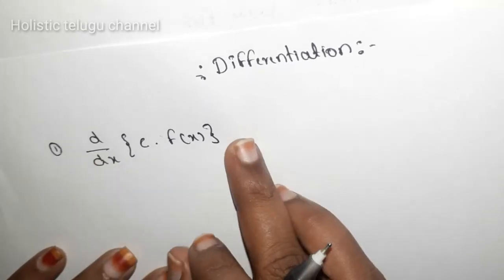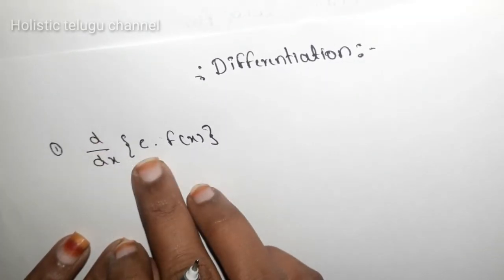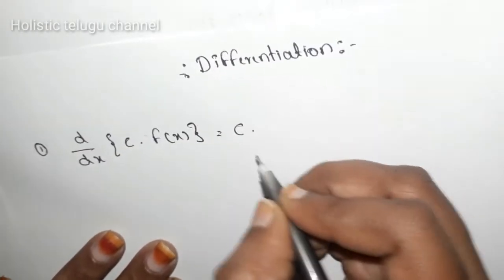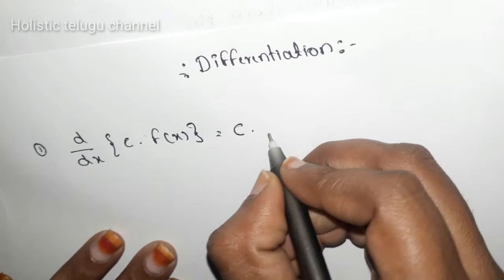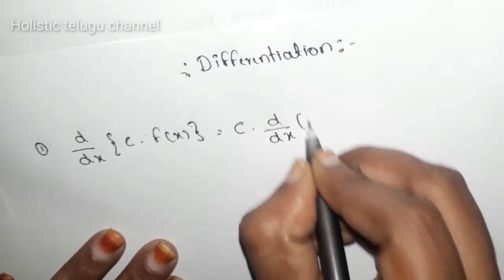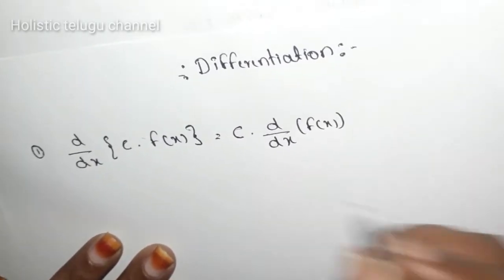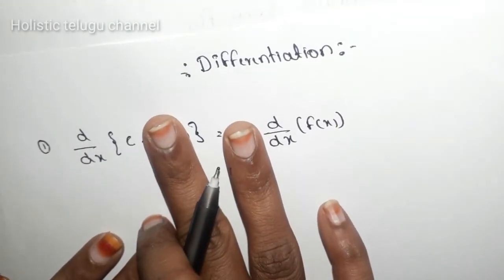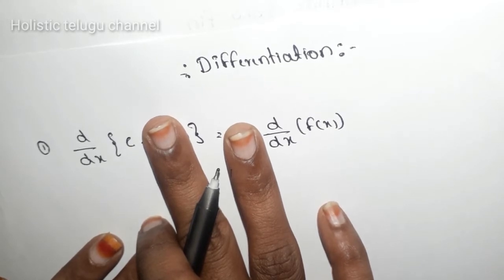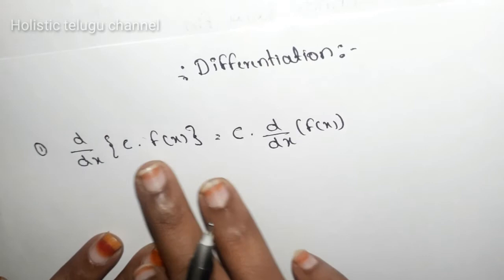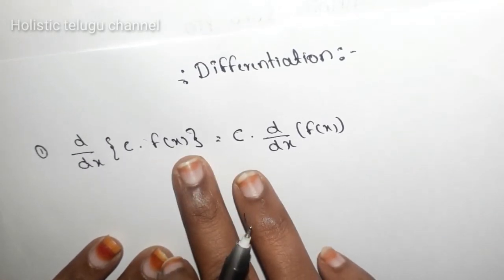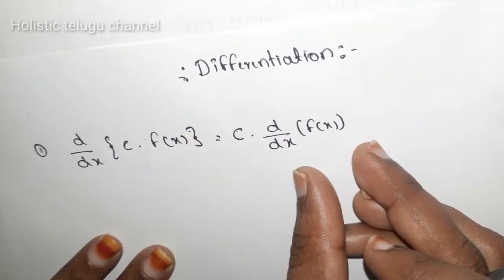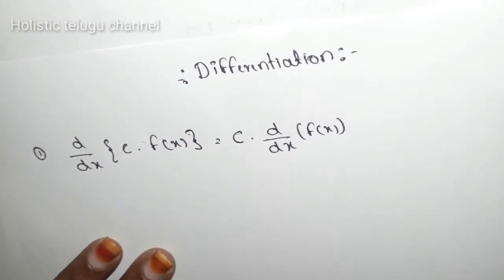So, this is the first one: d by dx of constant into function. Here, we are going to talk about the constant function.